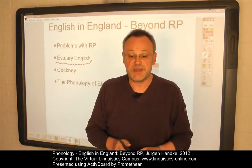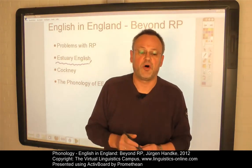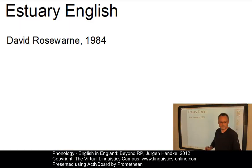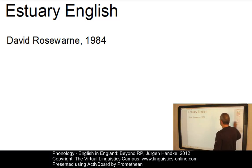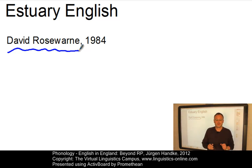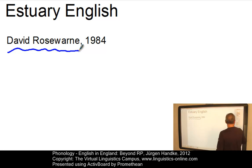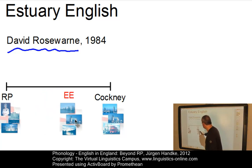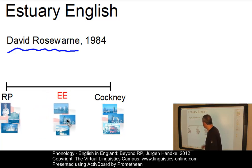One of them is Estuary English, a new variety of modified regional speech. The phenomenon of Estuary English was first described in 1984 by David Roseborn, who at the time was a postgraduate student in London. In the Times Educational Supplement, he described Estuary English in terms of a continuum, where Estuary English is somewhere in the middle between the two extremes: RP and Cockney, the local London speech.